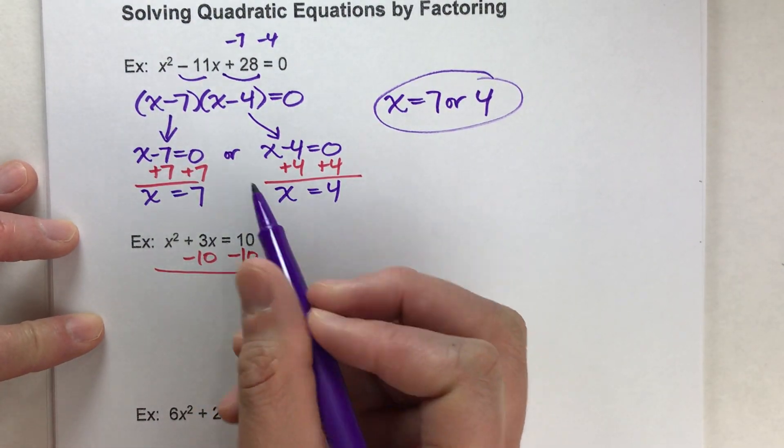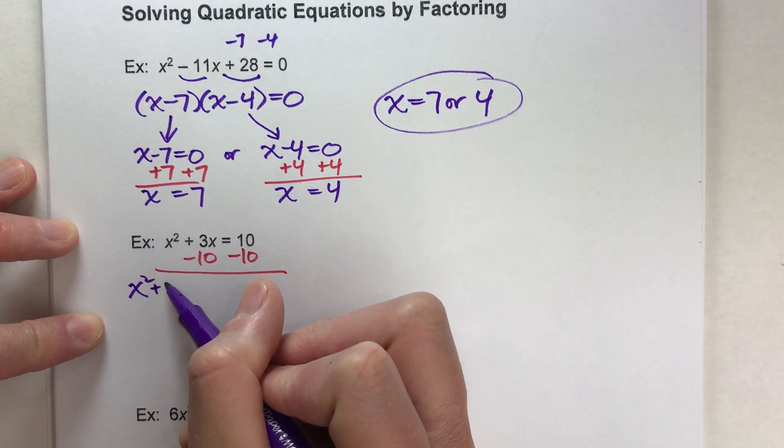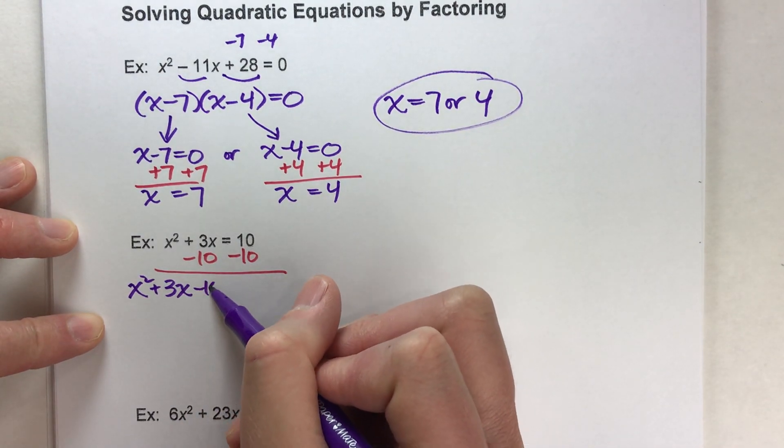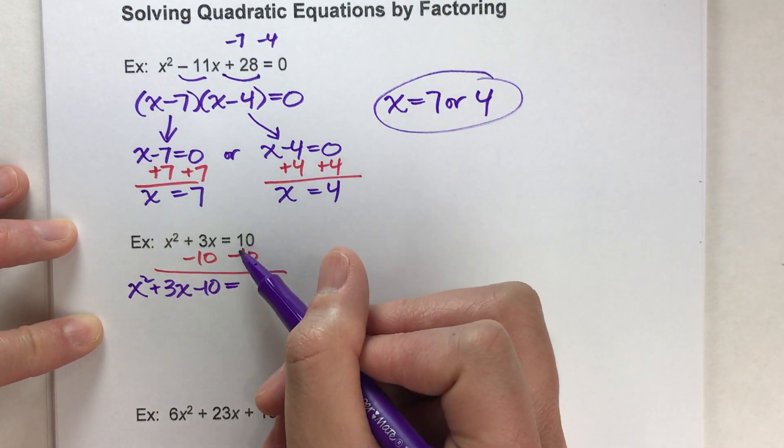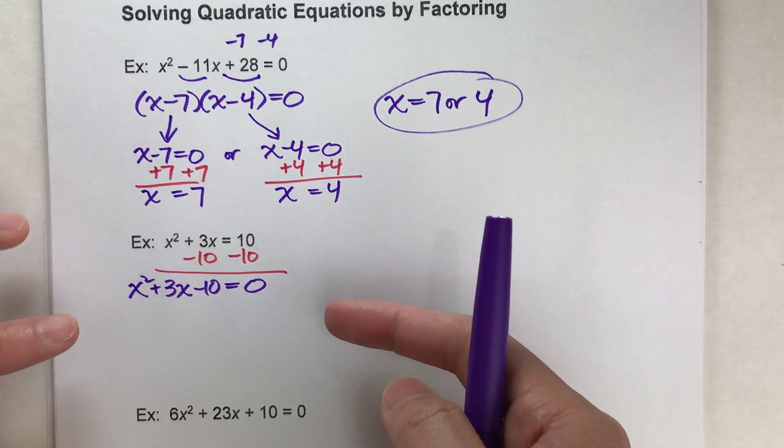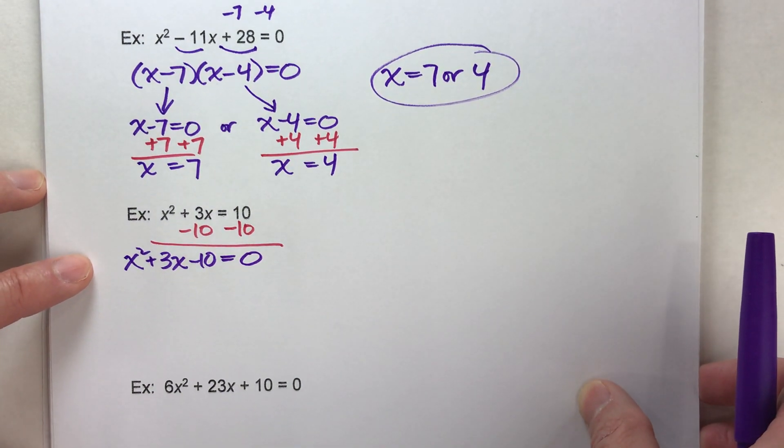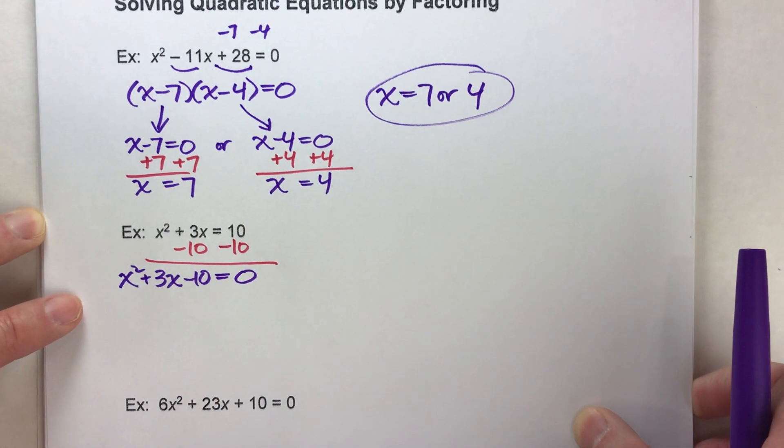When I do that over here, I can't combine any terms because there's no like terms so I'll keep them all separated. On the other side 10 minus 10 is 0, and look now I've got all the terms on one side of the equal sign and it's equal to 0.